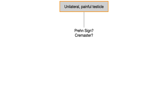Let me explain what these things are. For the Prehn's sign, elevation of the scrotum — literally putting your hand around the scrotum and lifting the affected testicle up — if that improves the pain, that's a positive Prehn's sign.